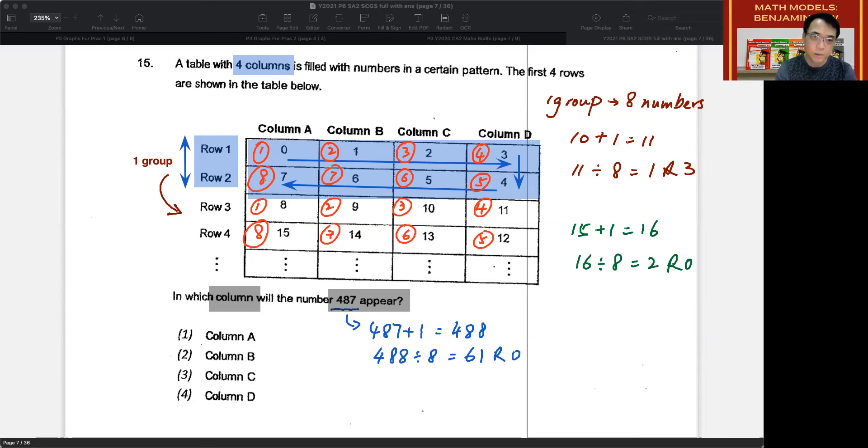So with 61 remainder 0, as I just taught you, the remainder 0 will refer to the remainder 0 here, meaning that it is in number 8. So a 0 is the same as 8, and an 8 is column A. Therefore, for this particular question, the answer is that number 487 will appear in column A.